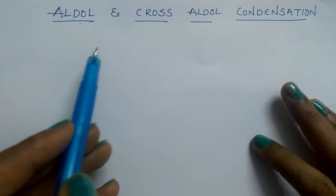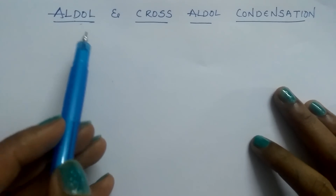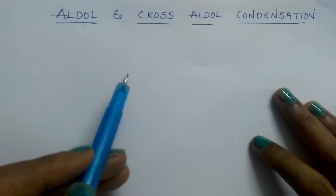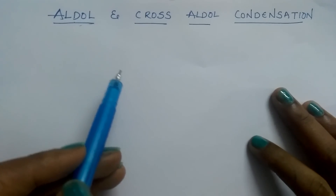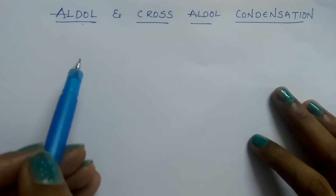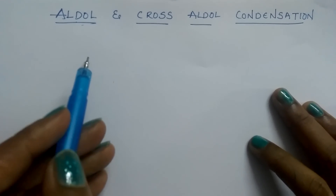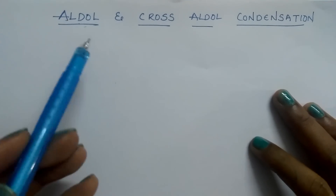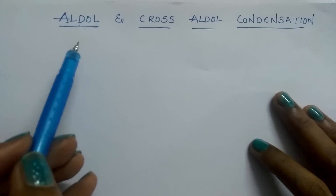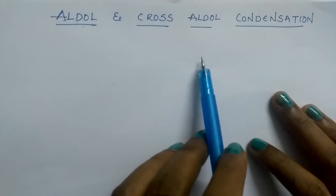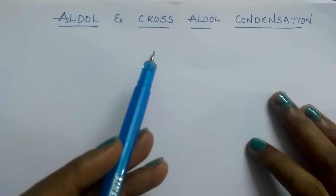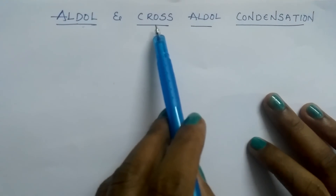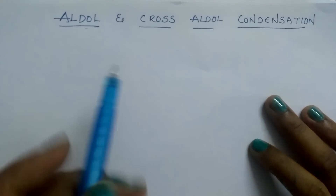If both reactants are the same type — like both are acetaldehyde, or both are ketones like acetone reacting with acetone — then the product is called aldol and the reaction is aldol condensation. If both are different, like acetaldehyde and propanaldehyde, then we call it cross aldol condensation.